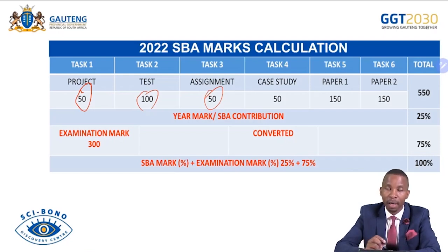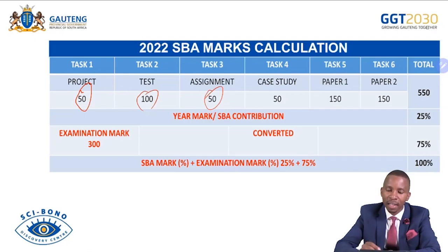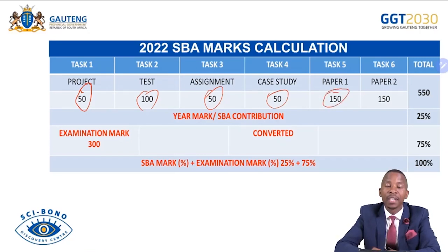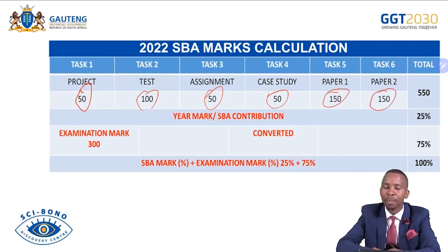In this calculation we don't include your Paper 1 and Paper 2 for the June examination. Task 4 was the case study in Term 3, out of 50 marks. Then you sat for the preparatory examination Paper 1 and Paper 2, out of 150 each. All in all, you have worked out of 550 marks.